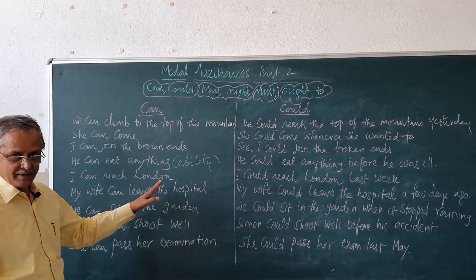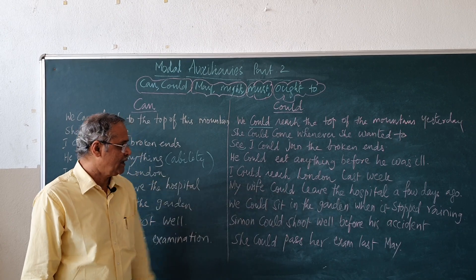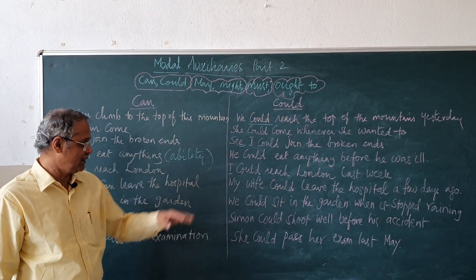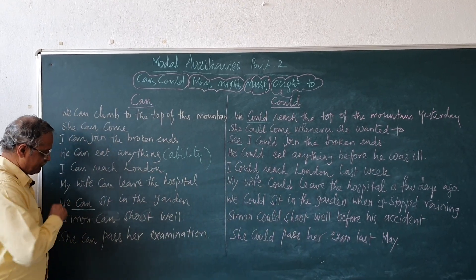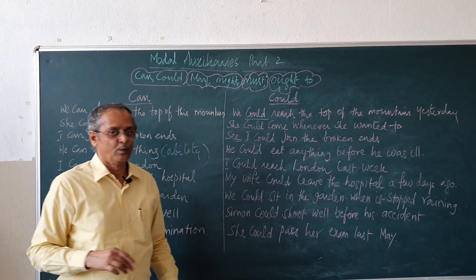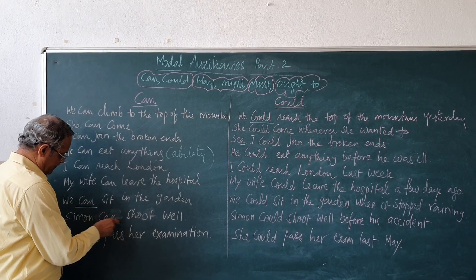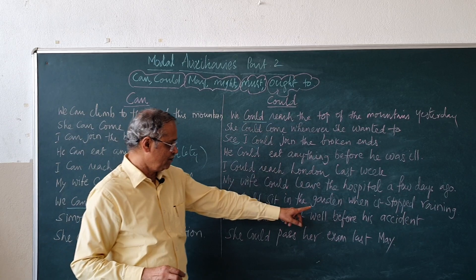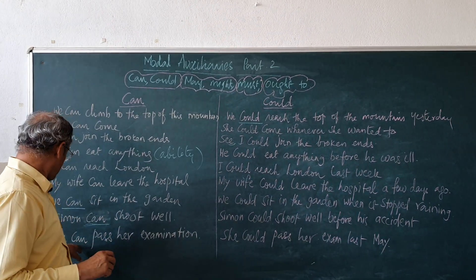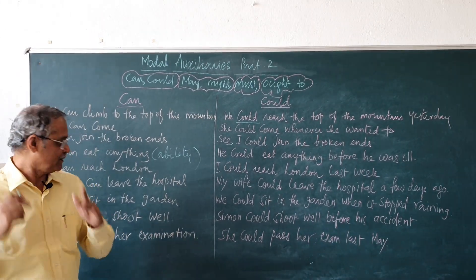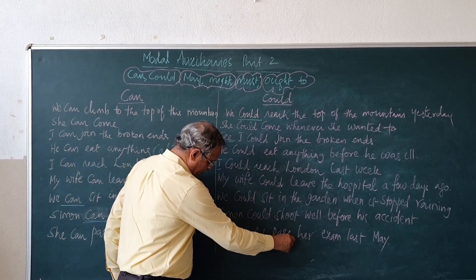'My wife can leave the hospital' — permission; the doctors have permitted her. 'My wife could leave the hospital a few days ago' — refers to the past. 'We can sit in the garden' — permission; we are permitted to sit in the garden. 'We could sit in the garden when it stopped raining' — a kind of ability. 'Simon can shoot well' — ability. 'Simon could shoot well before his accident' — prior to the accident he could shoot very well, now he is not able to. 'She can pass her examination' — ability. 'She could pass her examination last May' — referring to the past.